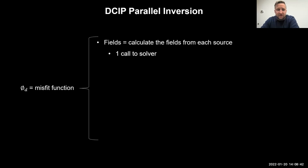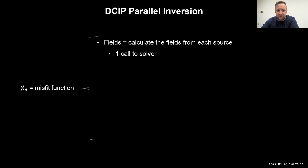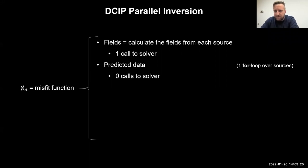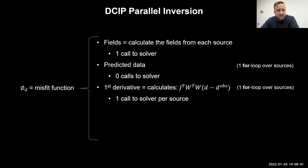The misfit function is computationally heavy because of a few things we have to tackle within it. The first part is calculating the fields — we need to know how to calculate the fields with a given model. This involves one call to the solver, done over all sources at once by handing it multiple right-hand sides. It's efficient in a sense, but it is one of the heavier sides of the computation. After we know the fields, we can calculate the predicted data, which has one for-loop but doesn't require solver calls. Each subsequent operation will also need the fields.